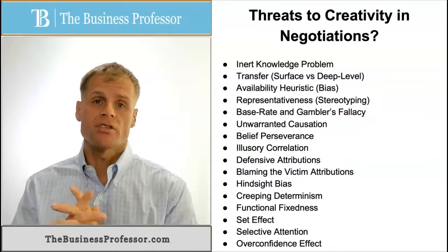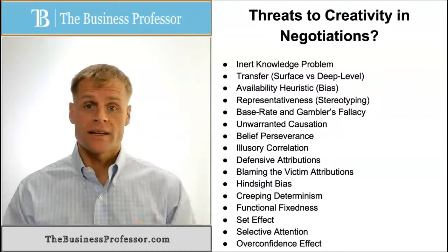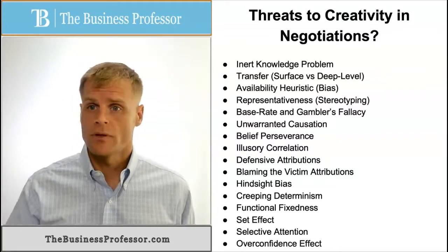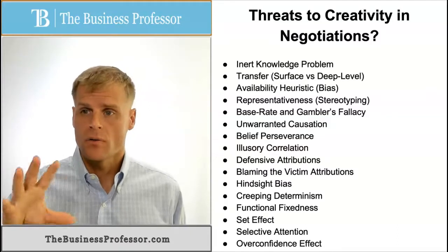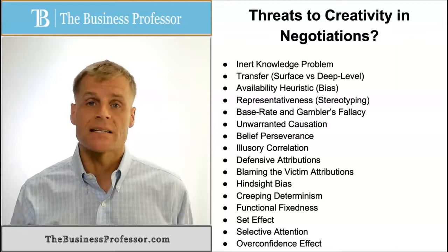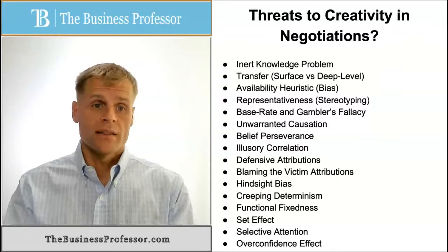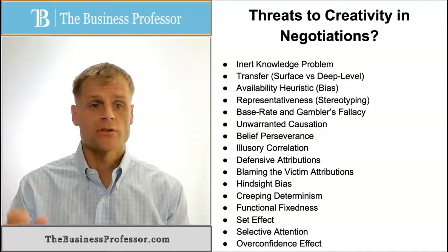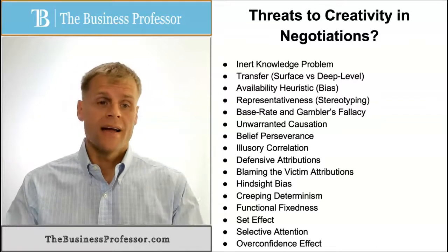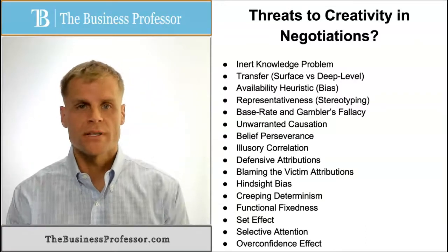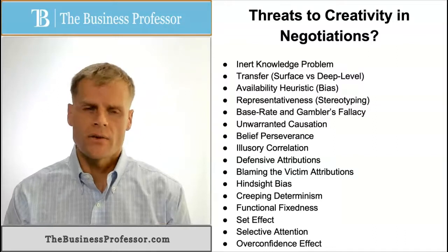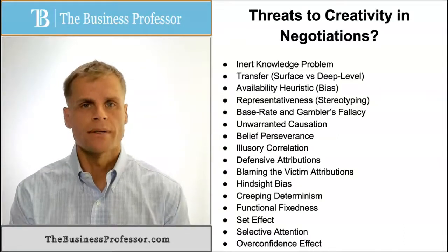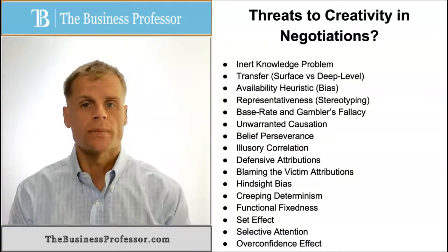Representativeness is making assumptions about a situation, other people, or scenarios. A specific form of it is stereotyping, where you assume something is going to happen or certain characteristics exist just because of the surface-level characteristics of someone or the situation. You think one situation is representative of how all similar types of situations will go, which is generally not the case. It causes you to keep things narrow and in a box rather than thinking creatively about ways you could go in a particular negotiation.